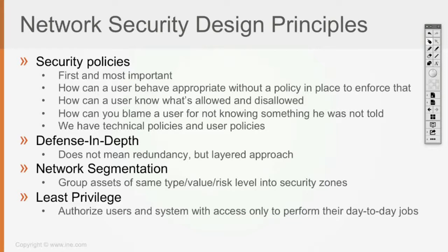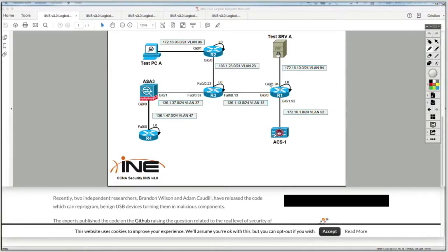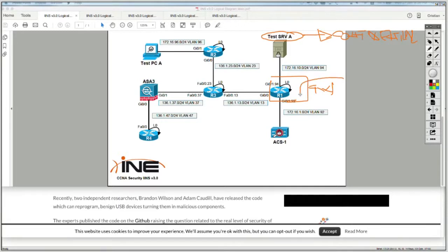Then we have network segmentation, which is grouping. This will also be greatly helped if assets have been properly identified. Network segmentation means grouping assets of the same type of value or risk level into security zones. For example, if this is a firewall and Server A's data is classified as confidential, and that server is in VLAN 94 as a network segment, then the firewall has to provide a specific level of security for traffic flowing to and from that network segment.